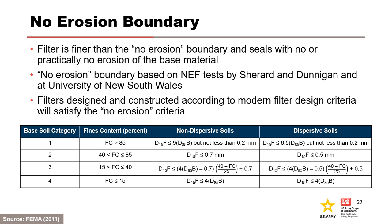For the no erosion condition, the filter is finer than the no erosion boundary and seals with no or practically no erosion of the base material. When evaluating an existing filter, start by performing an initial screening using the no erosion design criteria. Modern filter criteria used by Reclamation and USACE are adopted from FEMA 2011. The D15 of the filter is compared to the D85 of the base for various ranges of fines content represented by the base soil category. The no erosion filter design criteria for dispersive soils is more stringent. If a filter fails the no erosion screening, evaluate the other erosion boundaries using Foster and Fell 2001 to assess how much erosion is required for self-filtering to occur and whether it can be tolerated.